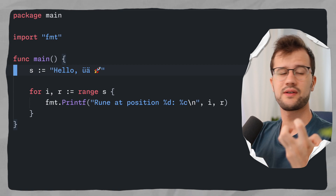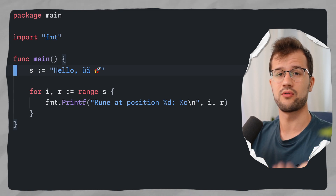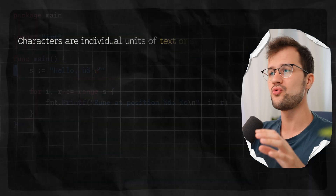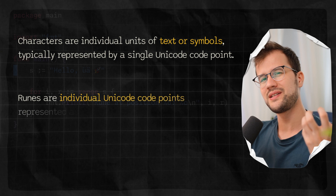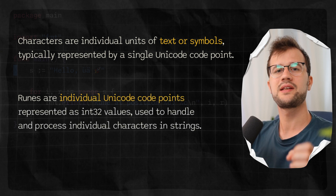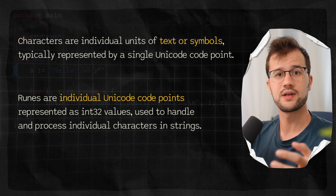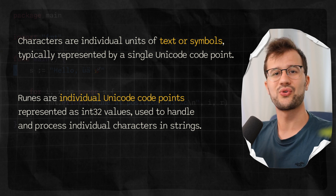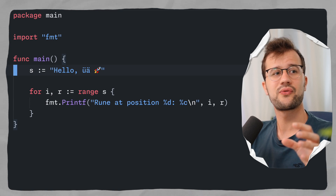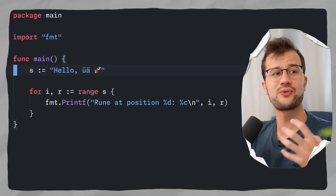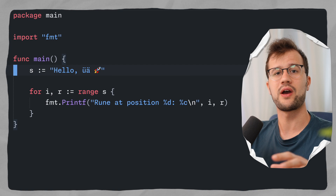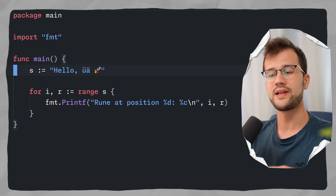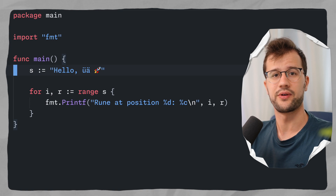Let's clarify the actual difference between characters and runes in Golang — there is a fundamental difference. Characters in general are just symbols, whereas runes are Unicode code points, which are similar to simple characters but have a specific focus on Unicode encoding. A common use case for runes would be text processing or text analysis, where you analyze each individual character. This is especially important for internationalization, where you have to handle many different languages with lots of different symbols, such as Asian languages.